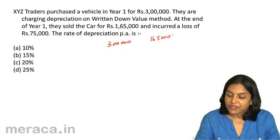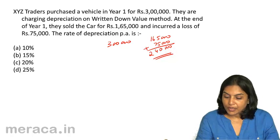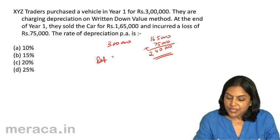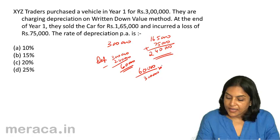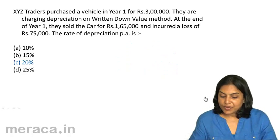Since they sold it for Rs. 1,65,000 and the loss was Rs. 75,000, the book value must have been Rs. 2,40,000. Therefore, depreciation equals Rs. 3 lakh minus Rs. 2,40,000 = Rs. 60,000. The rate of depreciation is 60,000 divided by 3,00,000 into 100 = 20%. The correct answer is C, 20%.